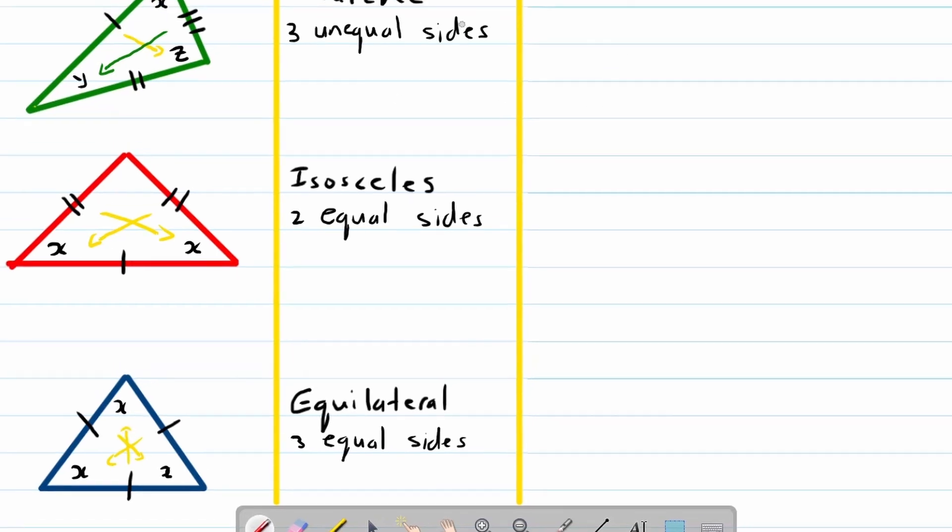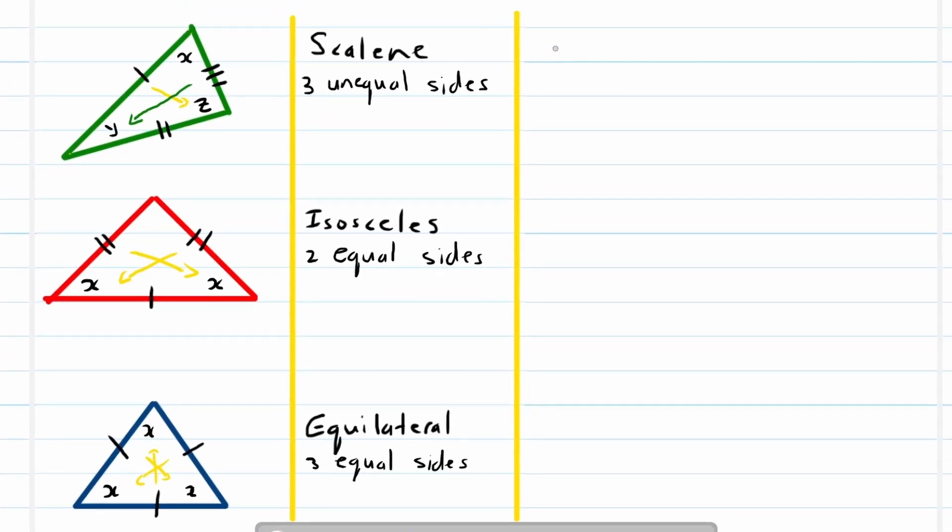A quick recap. A scalene triangle is three unequal sides, therefore also three unequal angles. Now isosceles triangle has two equal sides, therefore also two equal angles. Equilateral triangle has three equal sides, therefore three equal angles.